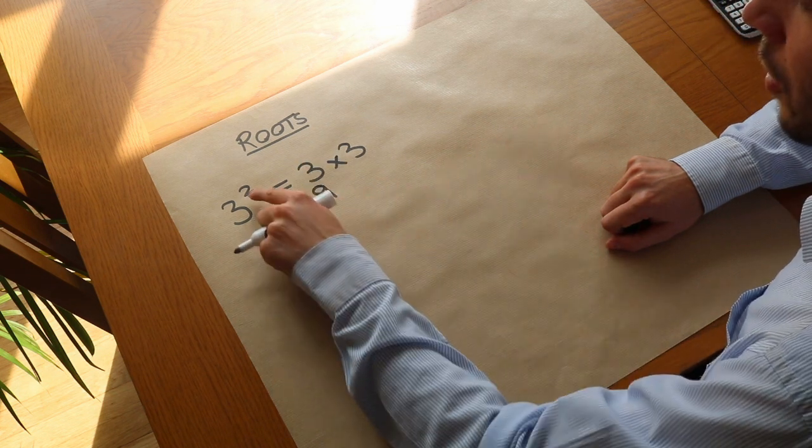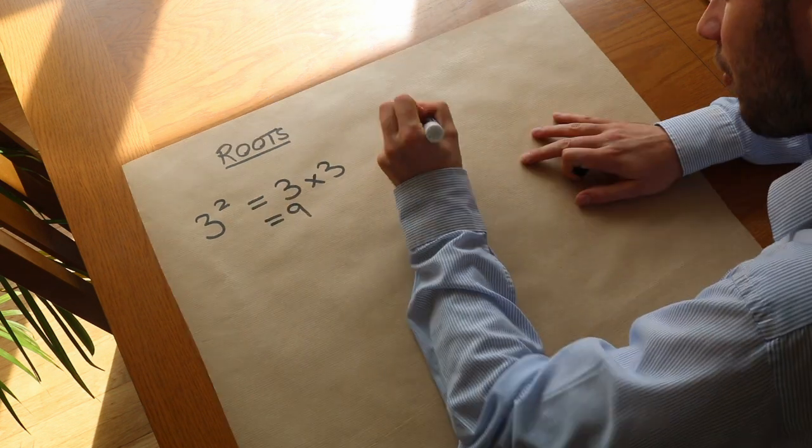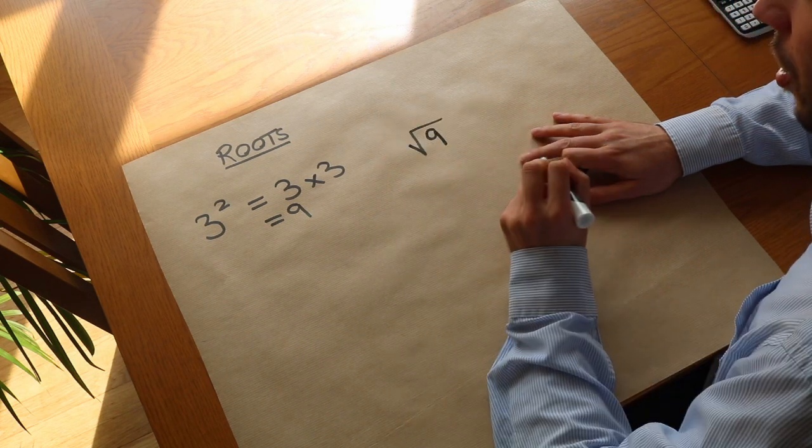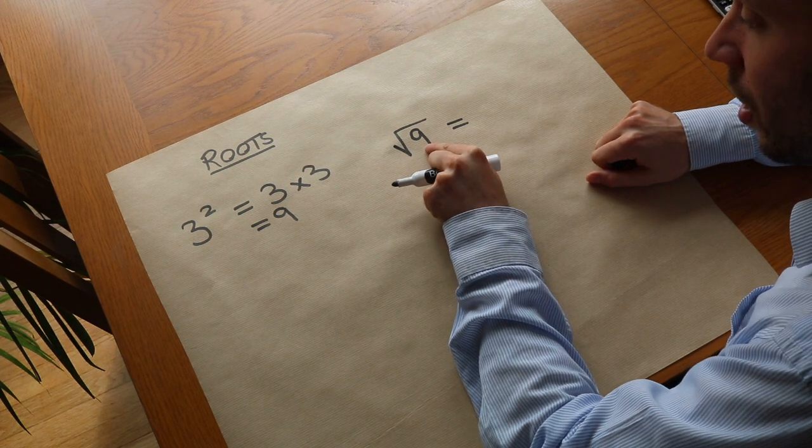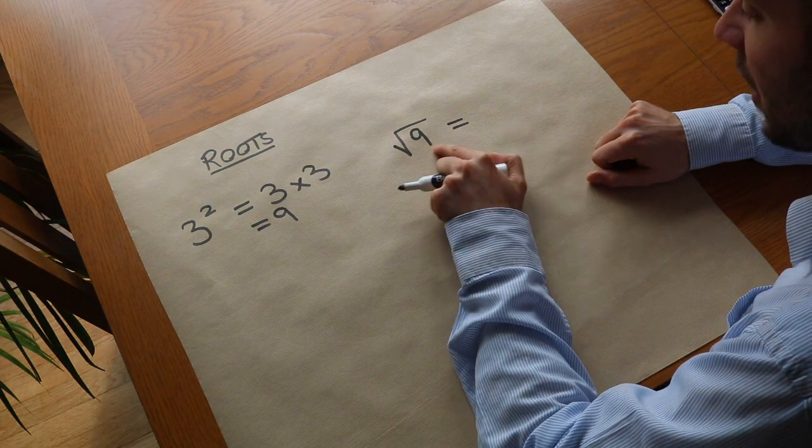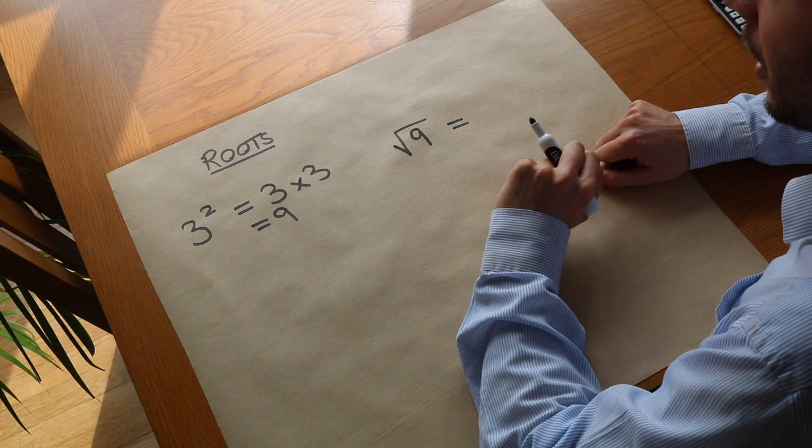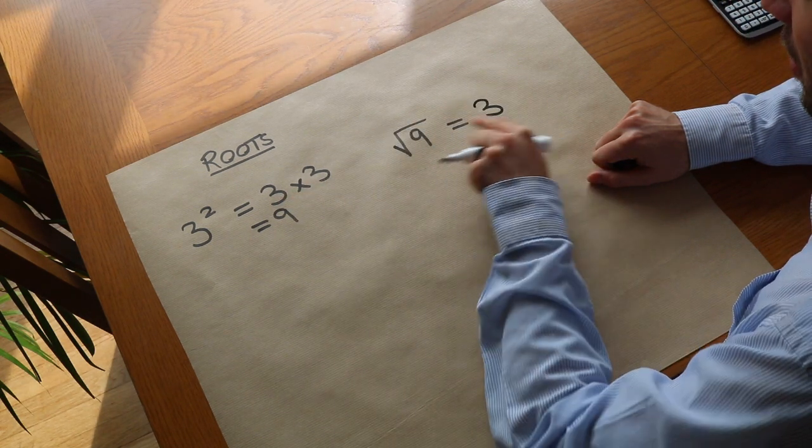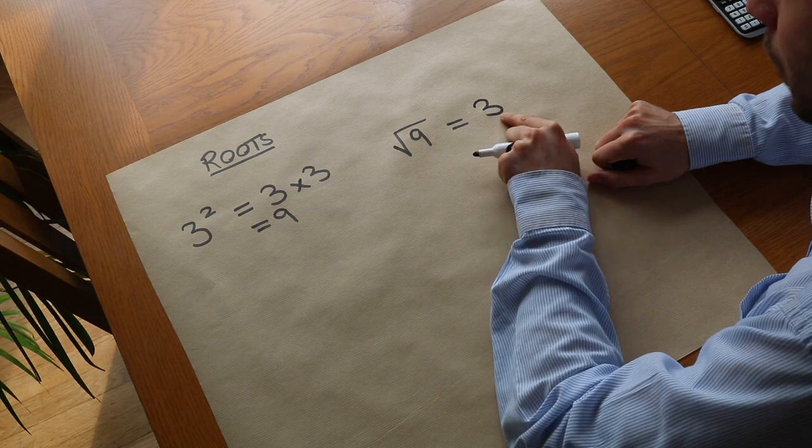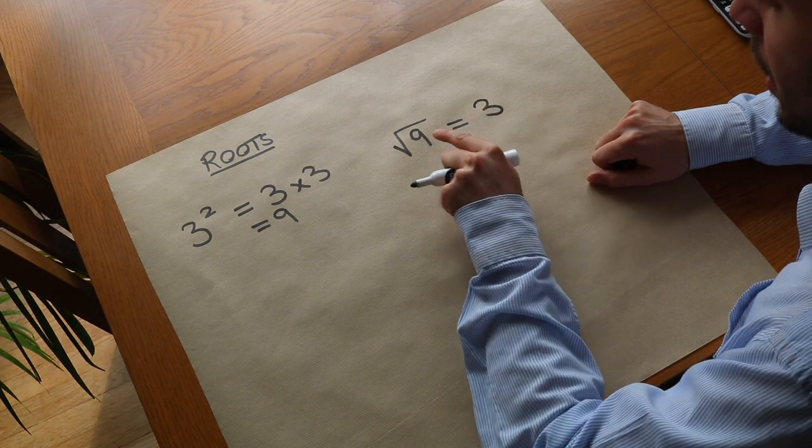We can actually do the opposite of that. If we have the square root of 9, that means what number squared would give you 9, which means what number times itself gives 9. We know that number is 3 because 3 multiplied by itself gives you 9.